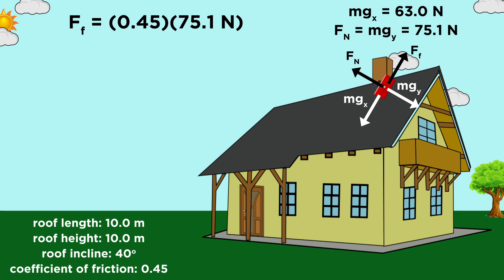Then with that, we are able to calculate the frictional force that opposes the sliding motion caused by this parallel component. That will just be the frictional coefficient times the normal force, which gives us thirty-three point eight newtons in the negative direction.